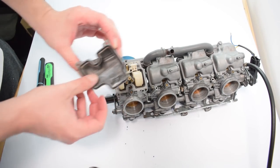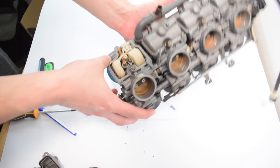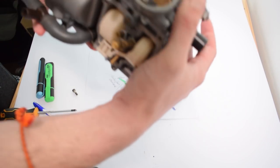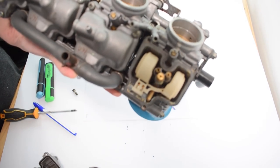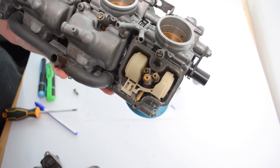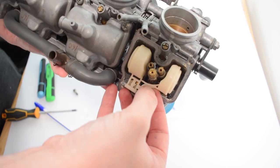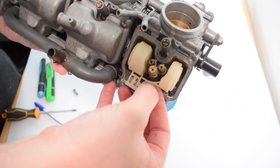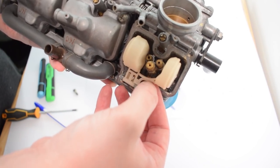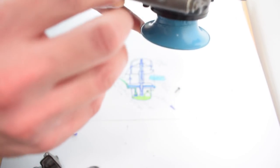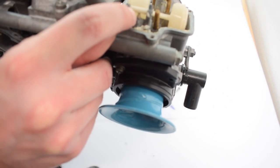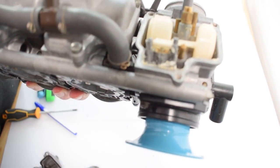So once we remove our float bowl, here we can see our float which is this part right here which goes up and down with the level of fuel and closes and opens the little float valve which is right there.